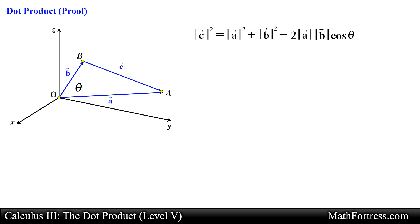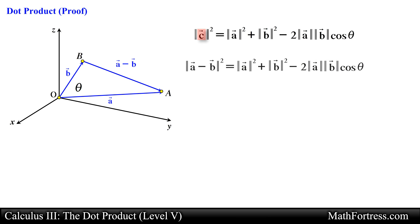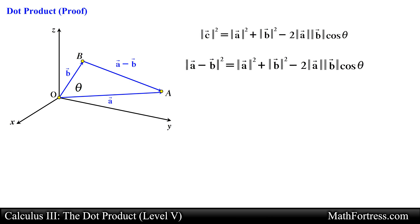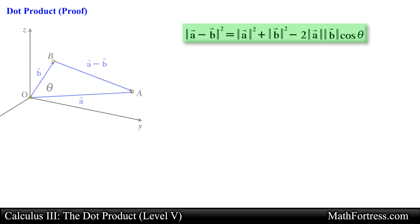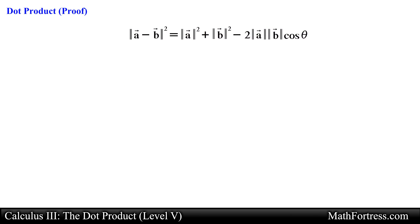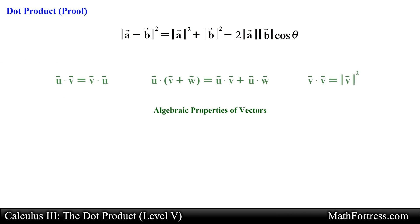Then we need to rewrite vector C into an expression that contains both vector A and vector B. Taking a look at the diagram we see that vector C is nothing more than vector A minus vector B. So we go ahead and replace vector C with this expression. Now the law of cosines looks like this. At this point we are done using geometric properties.